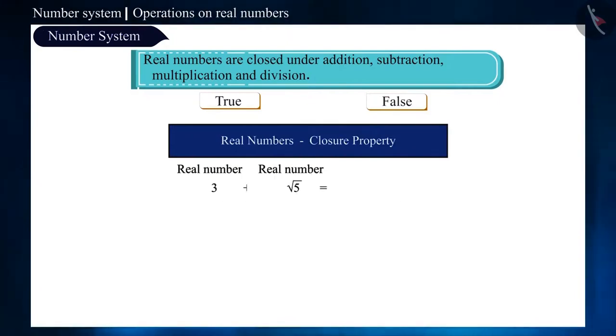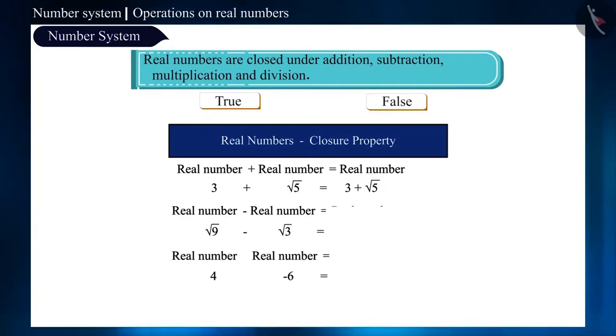Here are the two real numbers. On adding the 2, we get a real number. Similarly, on subtracting or multiplying two real numbers, we will get a real number only.